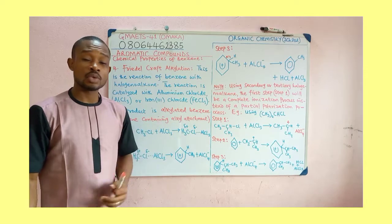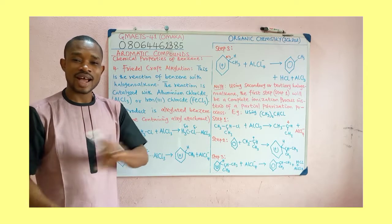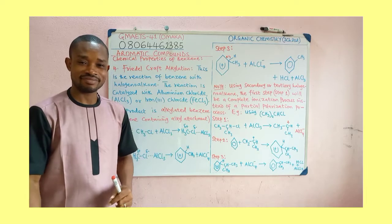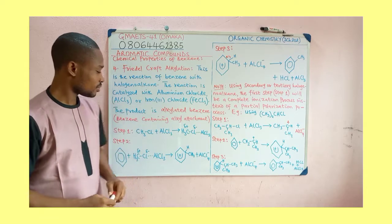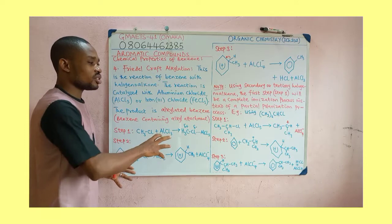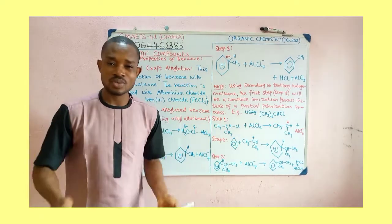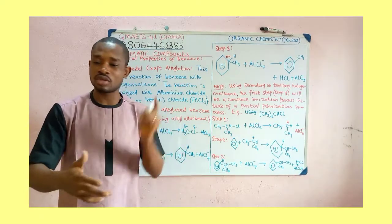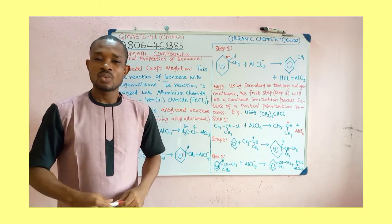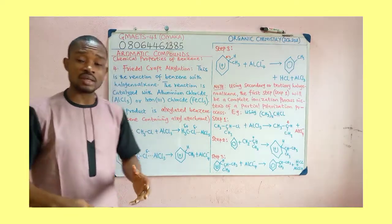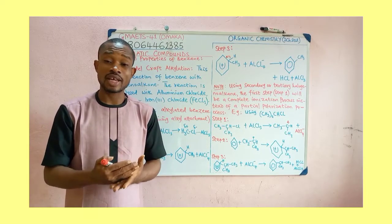By alkylated benzene we mean a benzene that contains an alkyl group. The catalyst used here is also a Lewis acid — it could be aluminium chloride or iron(III) chloride, similar to what we saw during halogenation. The reaction is similar to what we have been discussing for sulfonation, halogenation, and nitration. What happens in the first step is the production or formation of the electrophile.